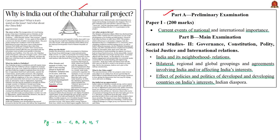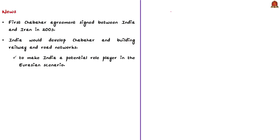The syllabus relevant to this news article is highlighted here for your reference. The original Chabahar agreement between India and Iran was signed in the year 2003, and within a year, India abandoned this project as it started engaging with the United States of America. In the year 2016, India agreed on a trilateral track with Iran and Afghanistan. As per the 2016 agreement, India would develop Chabahar port and then proceed with building railway and road networks — a strategic plan to make India a potential role player in the Eurasian scenario.